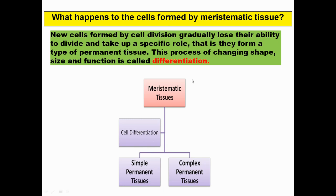What is differentiation? It is a process of changing the shape, size, and function of the meristematic tissue and its conversion into permanent tissue. Meristematic tissue divides repeatedly; however, permanent tissue loses their ability to divide but goes on to perform specialized functions.